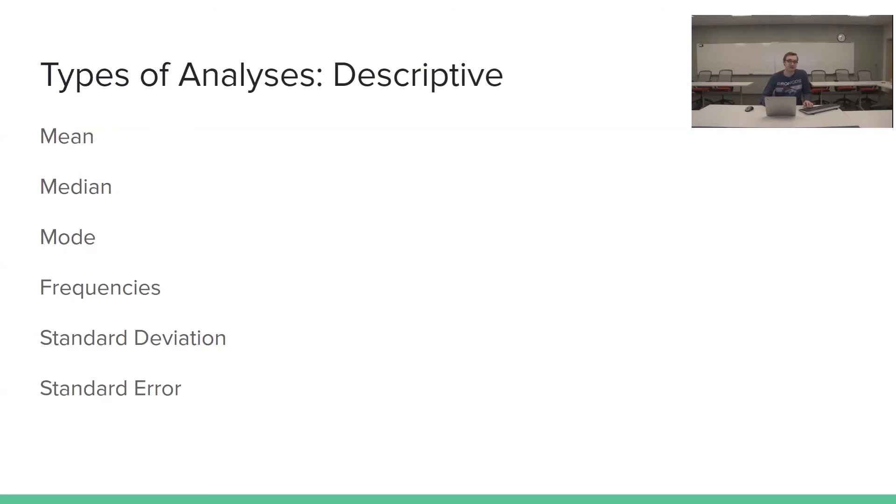Next we're going to go into some types of analyses. These are descriptive analyses. Some of them I'm sure you're pretty familiar with. Mean is the average of the set. Median is the middlemost number. Mode is the most common number. Frequencies are the number of times that the data value occurs. Standard deviation is a measure of how close numbers are to the mean. And standard error is the standard deviation of its sampling distribution or an estimate of that standard deviation.